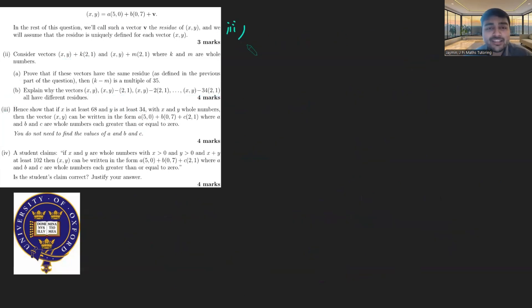Part 3: hence show that if x is at least 68 and y is at least 34, and x and y are whole numbers, then (x,y) can be written in the form a(5,0) plus b(0,7) plus c(2,1), where a, b, and c are whole numbers greater than or equal to 0. We're going to use the previous part, as is the case with most long maths problems.